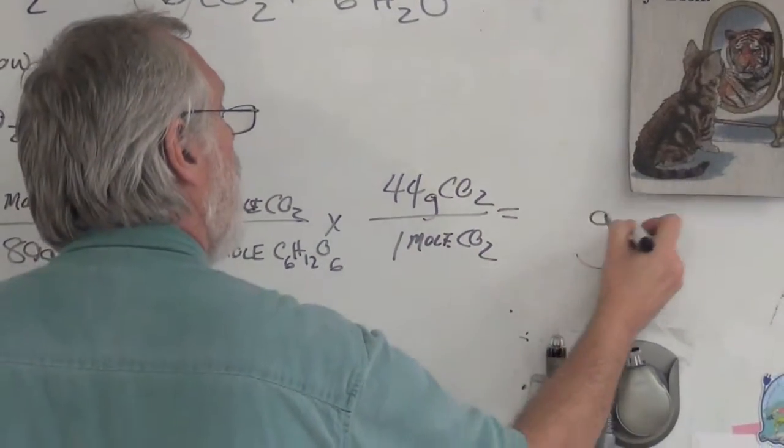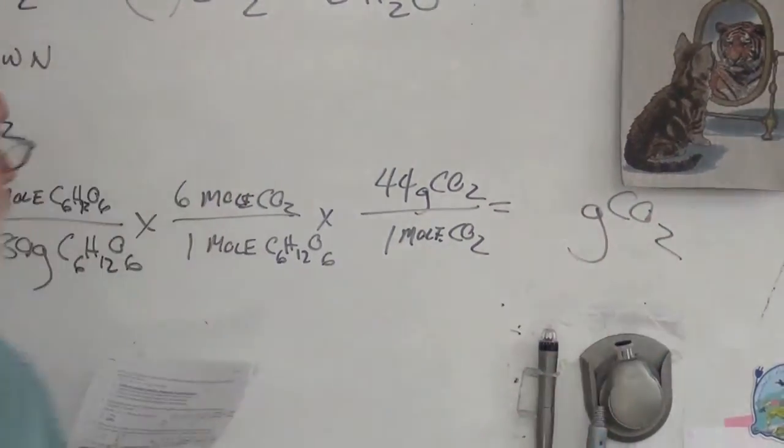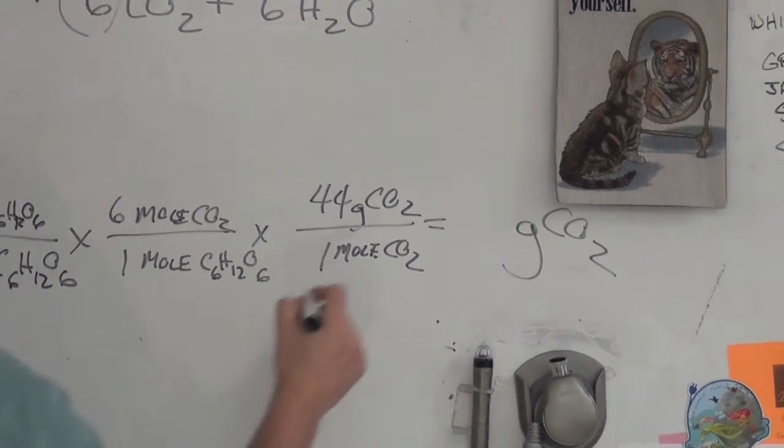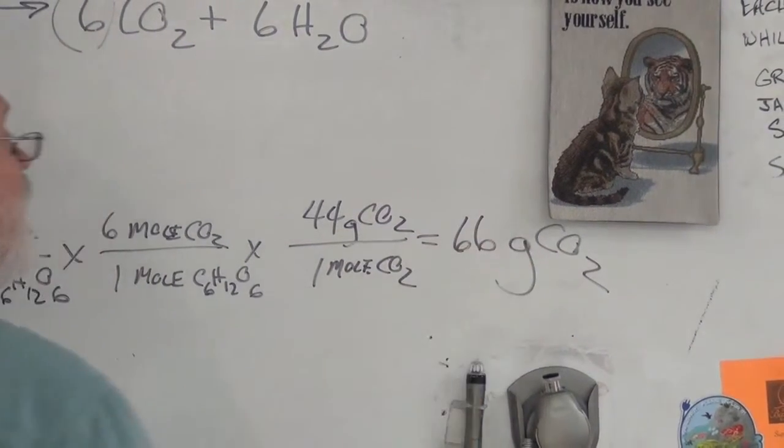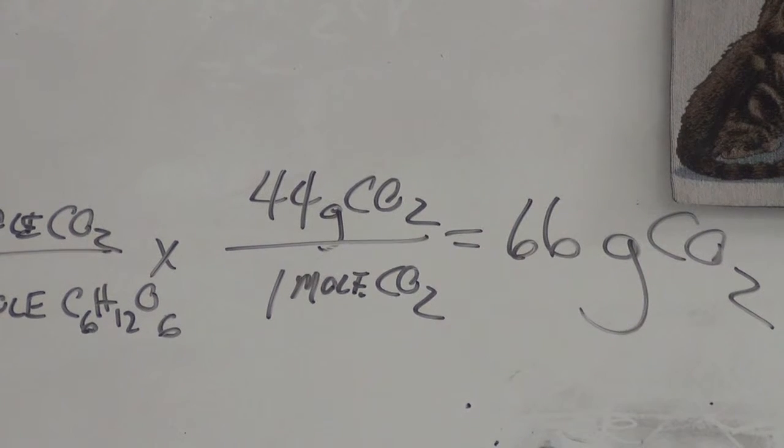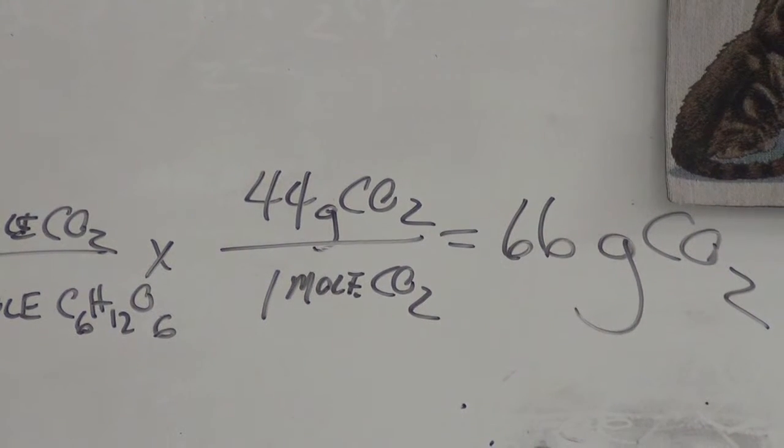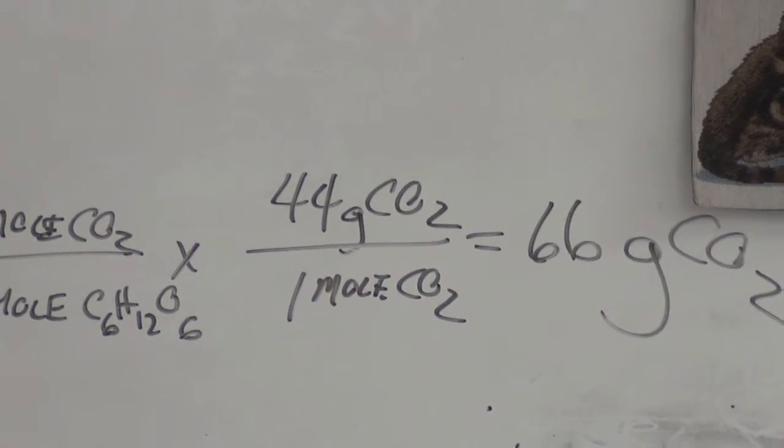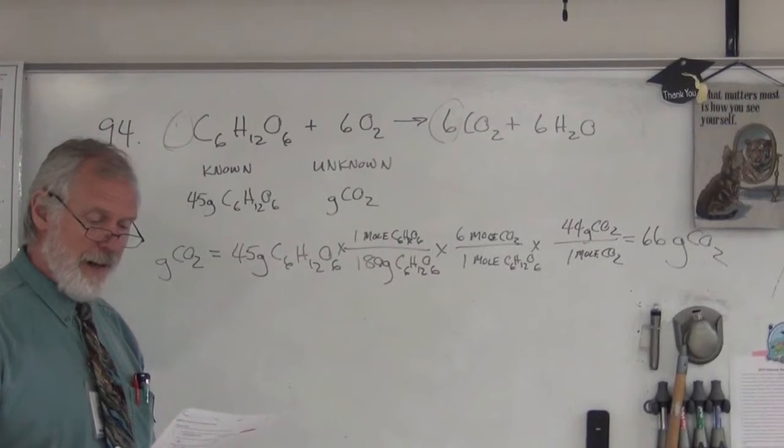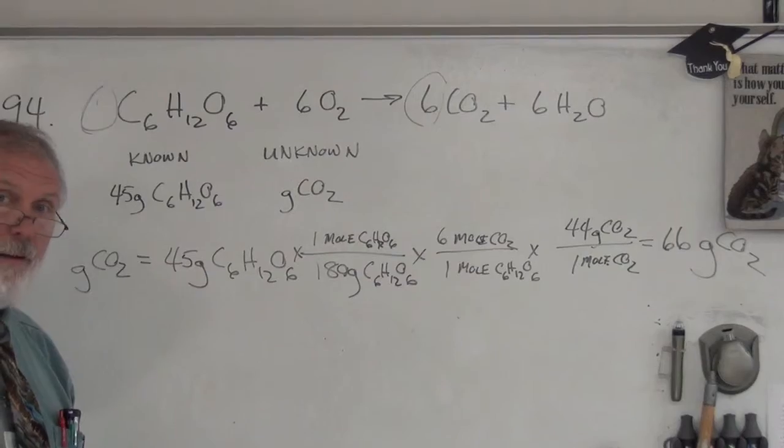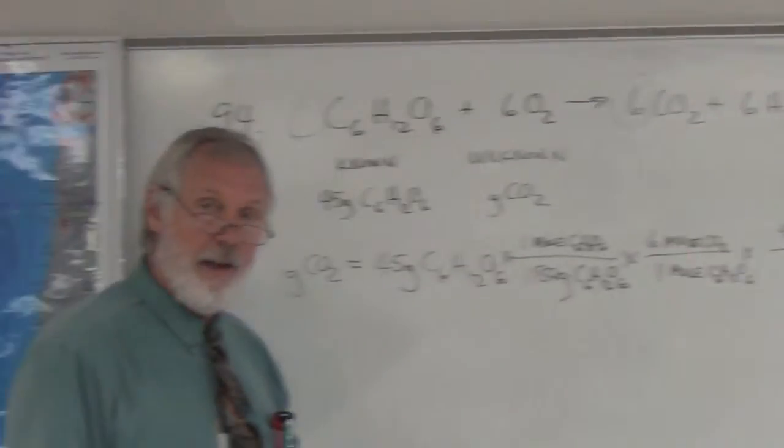Now, this is what we want. We want grams of CO2. That's what we come out to. And if you crunch this, you're going to find that you got 66 grams of CO2 for every 45 grams of sugar that you ingest. Wow, that's pretty crazy, isn't it? 45 grams sugar gets you 66 grams of CO2 gas. Huh. Just say huh. Okay. That's it.